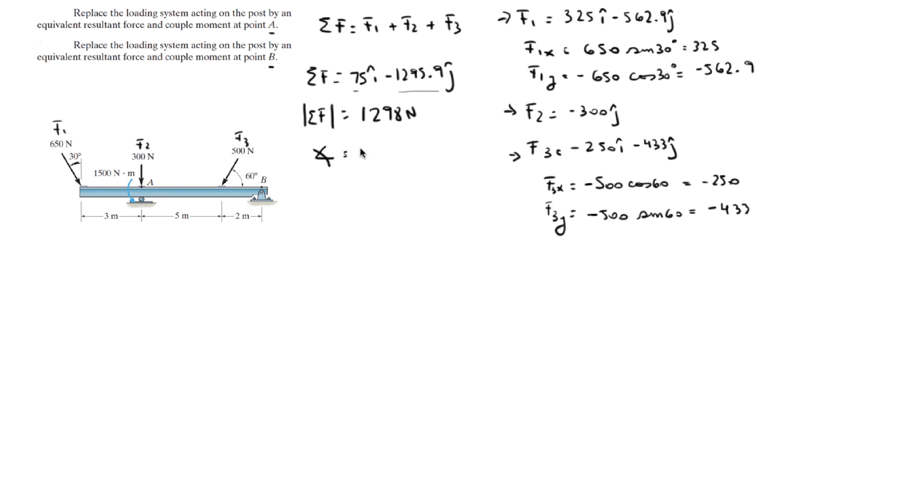And to find the angle you do the tangent inverse of negative 1295.9 over 75, and you get that the angle is 86.7 degrees, going down like that.